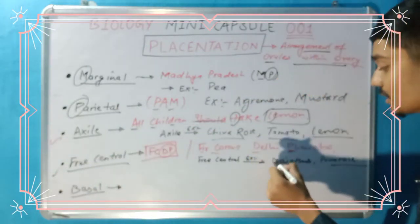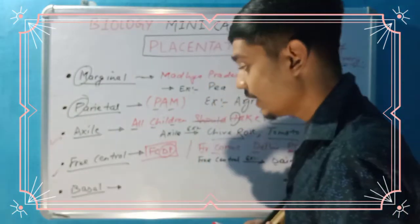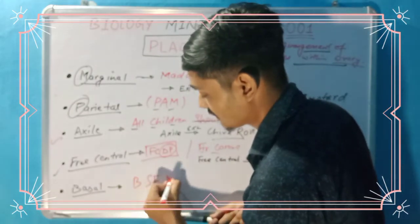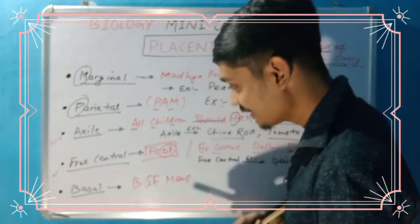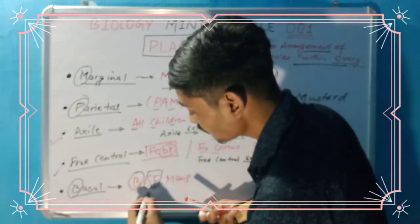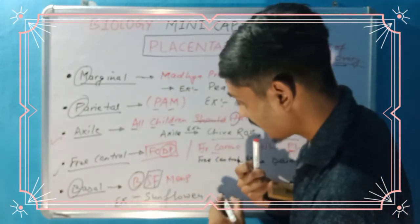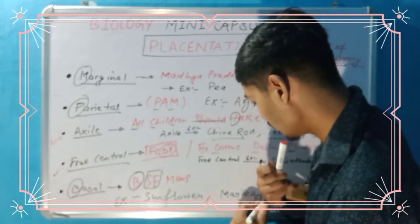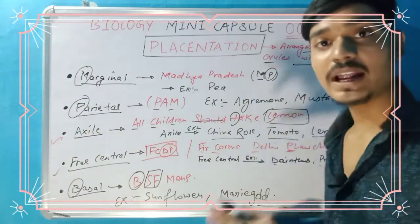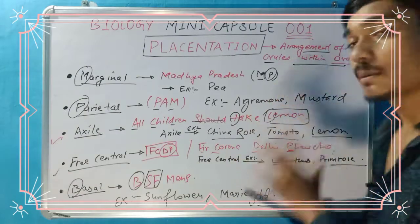The last one is basal placentation. Just like BSF means Border Security Force, here B is for basal, S is for sunflower, and M is for marigold. So the mnemonic BSF stands for: B for basal, SF for sunflower, and M for marigold. These are the examples of basal placentation.